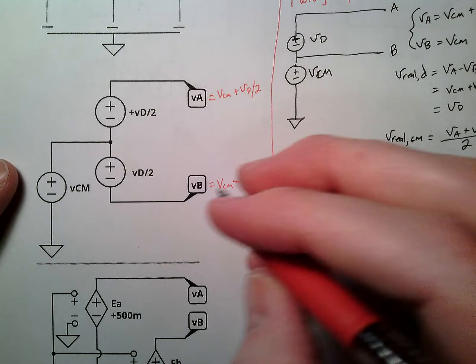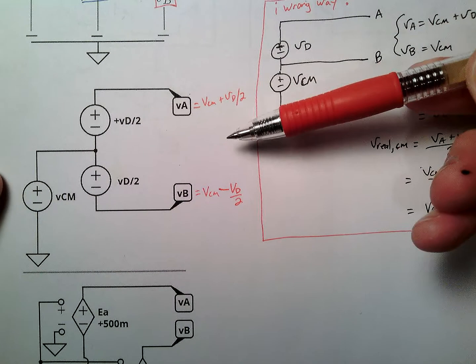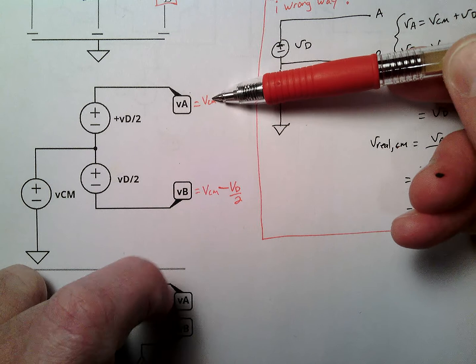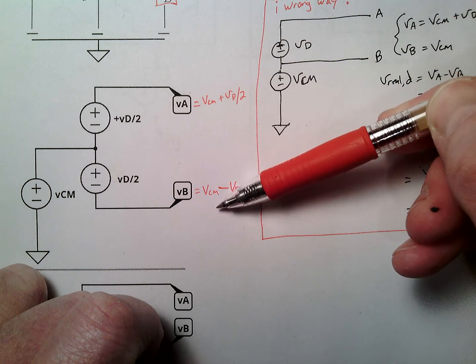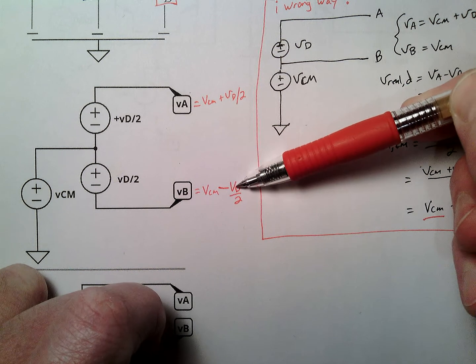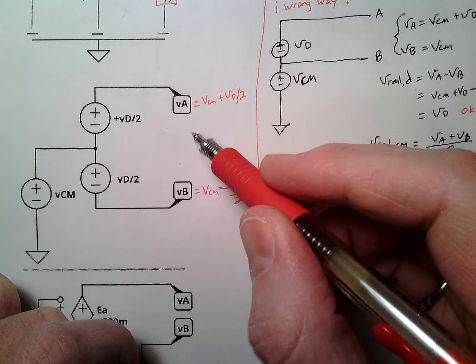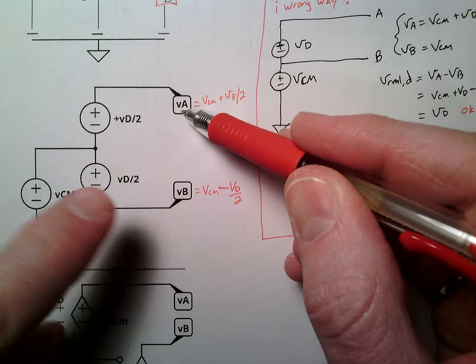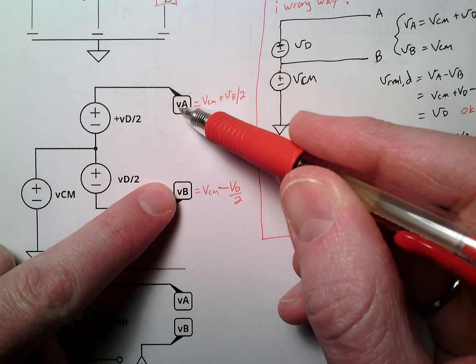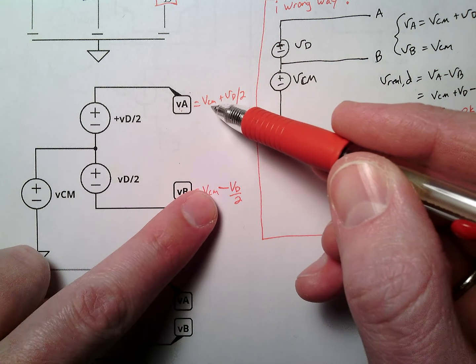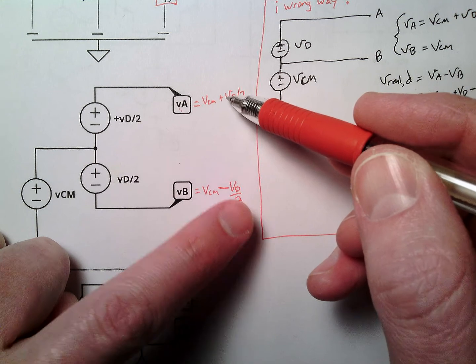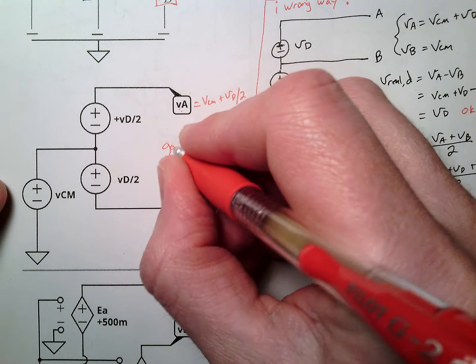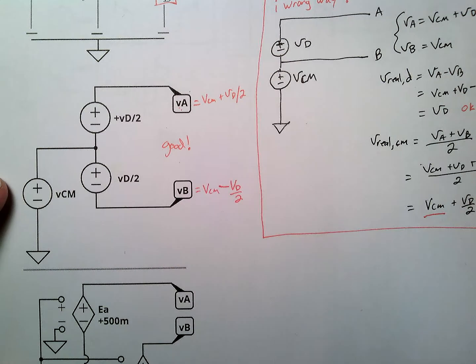Now we can find our real, we can see that there's all the symmetry here. If I find the difference, if I take VA minus VB, I'll get VCM plus this, minus VCM, the VCMs cancel, and I'll get VD. So the difference between these two is indeed just the term VD. If I take the average between these two, which means add them both up, I'll get 2 VCM, these terms will cancel, take 2 VCM divided by 2, and we're good. So this is good, a good way to do it.